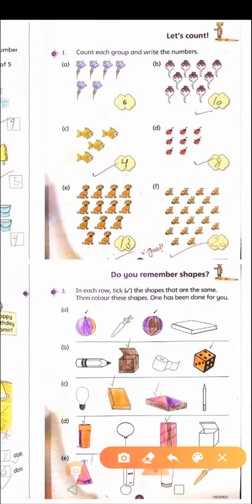One has been done for you. Circle the shapes which are the same and then color them. This is also very easy.